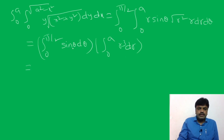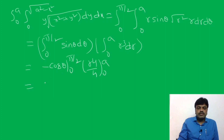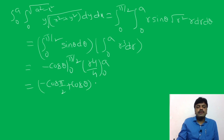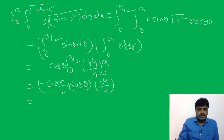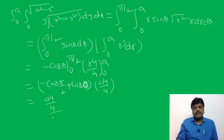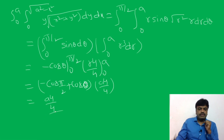Evaluating: ∫₀^{π/2} sinθ dθ = [−cosθ]₀^{π/2} = −cos(π/2) + cos(0) = 0 + 1 = 1. And ∫₀^a r³ dr = [r⁴/4]₀^a = a⁴/4. So the final answer is 1 × a⁴/4 = a⁴/4.